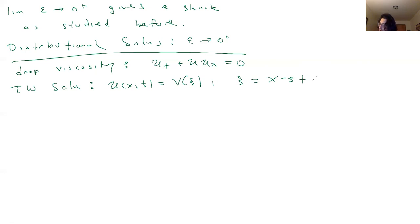If I go ahead and do that, then u_t plus u*u_x is going to be equal to minus s*v' plus, as we showed before, v squared over 2 prime, equal to zero. So if we integrate, we end up with minus s*v plus v squared over 2 is equal to some constant.